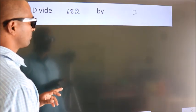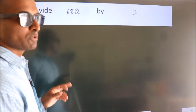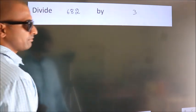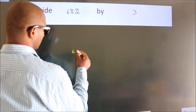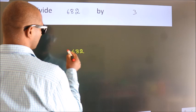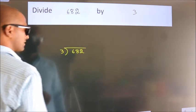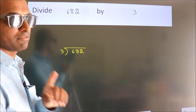Divide 682 by 3. To do this division, we should frame it this way. 682 here, 3 here. This is your step 1.